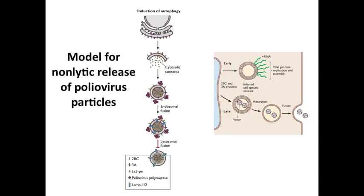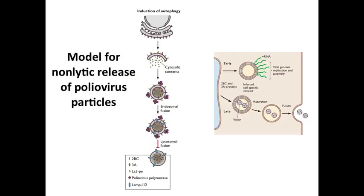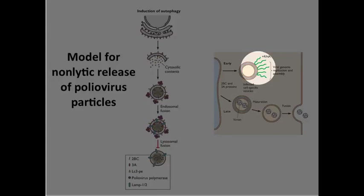Not all viruses lyse cells, and if they're not a budding virus, we have to figure out how they get out. Poliovirus generally lyses the cells it infects, but there's also some evidence for release in the absence of lysis. When poliovirus and related viruses infect cells, the cells respond by inducing the autophagy pathway, forming double-membrane vesicles that encompass the cytoplasm. The virus actually takes advantage of this by replicating its genome on the surfaces of these vesicles.